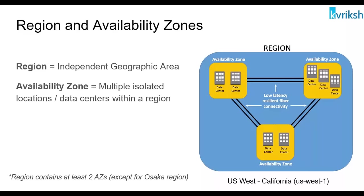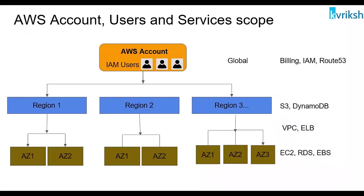When you design your architecture, you will typically keep your machines in different availability zones so that if one AZ goes down, you have your machine running in another AZ and your application has high availability. Now let's move ahead and talk about AWS services. If you have an AWS account, it is a top-level entity — once you have it, you can deploy your infrastructure in any AWS region.